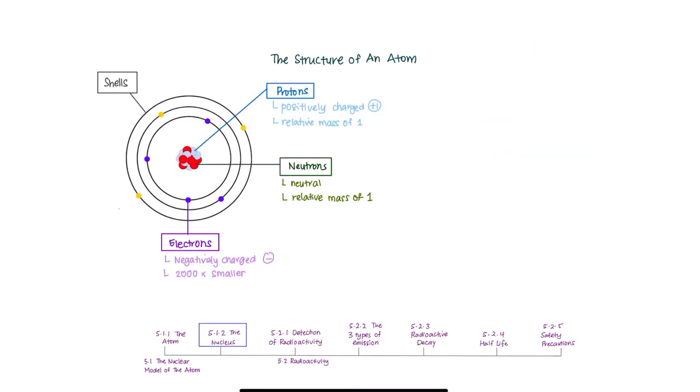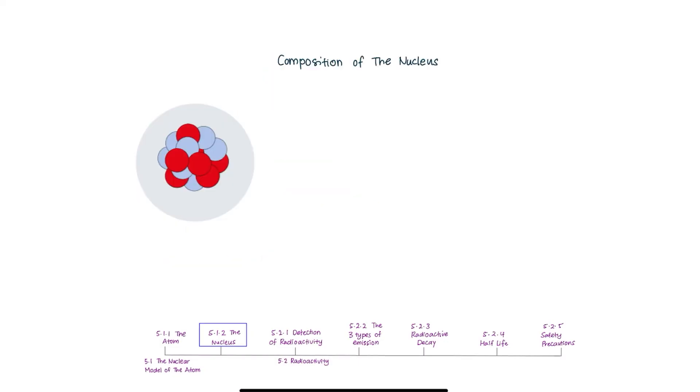Next, the nucleus. Now that we have understood better the structure of the atom, we can look into the composition of the nucleus by looking at this model. If we look into the center of the atom, we will find its nucleus. It is made up of positively charged protons and neutrally charged neutrons. So, this makes our nucleus positively charged overall.